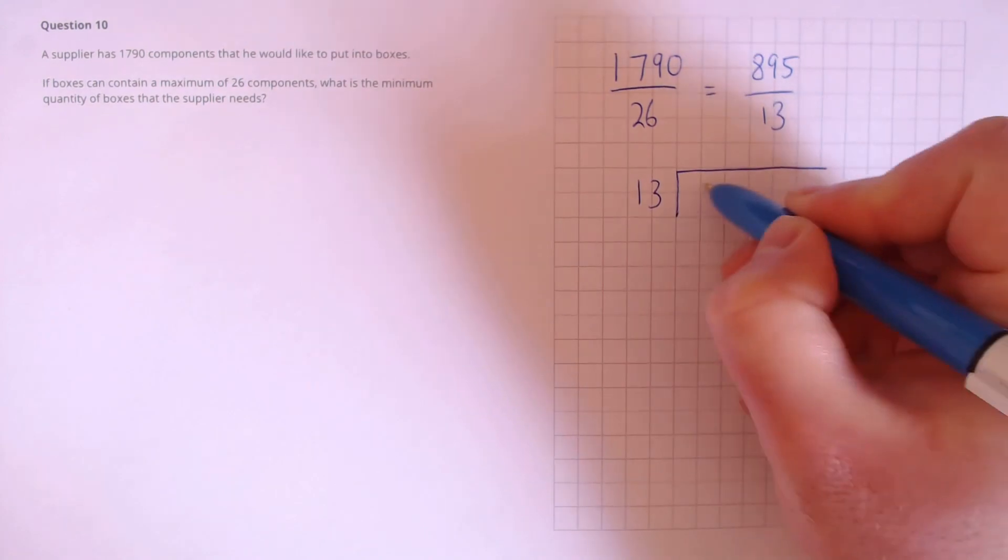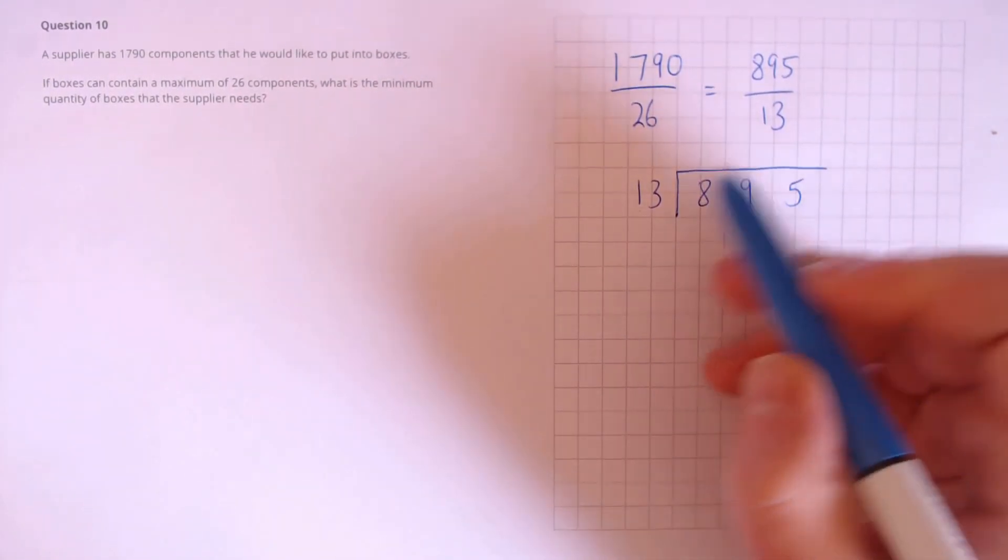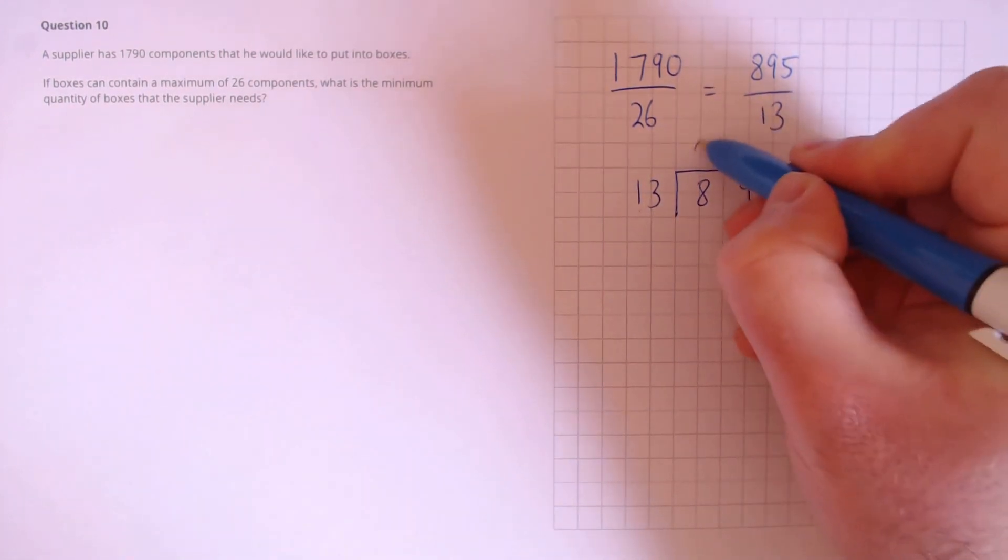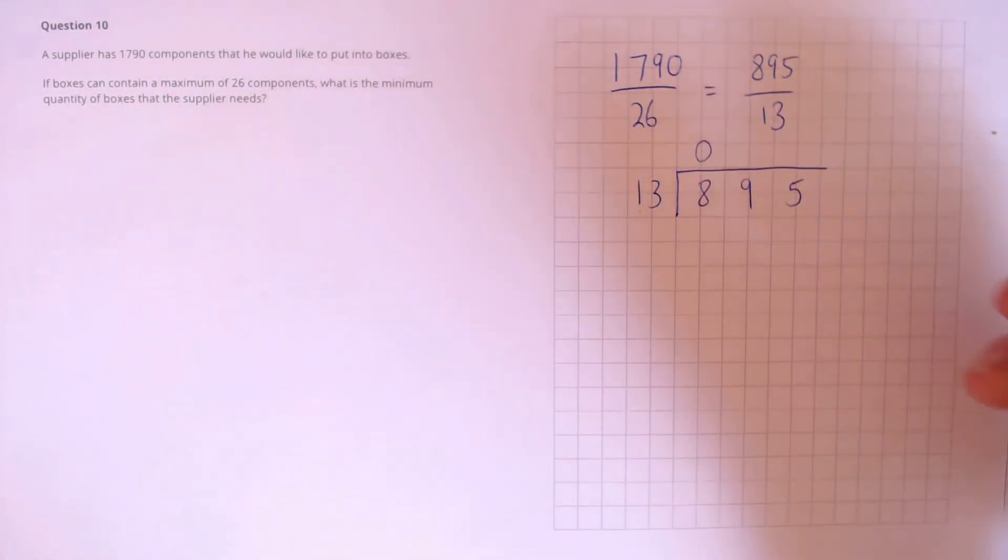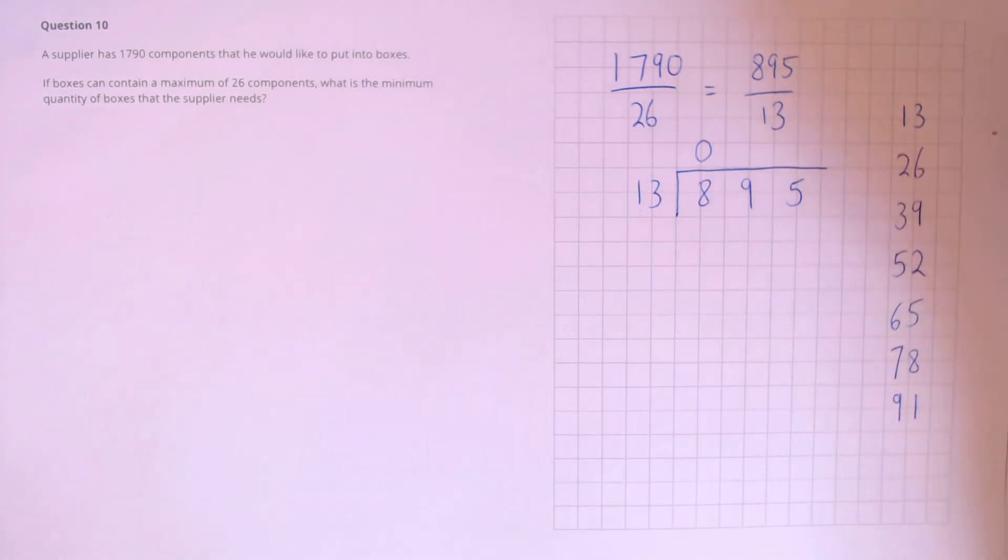13's into 895. 13 doesn't go into 8, so let's have a look at 13's into 89. To do this, it's useful to consider our 13 times table. So, let's write that out here. 39, 52, 65, 78, and 91. That gives us enough to look at this.